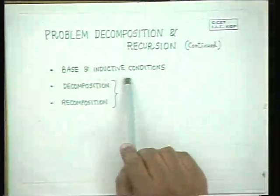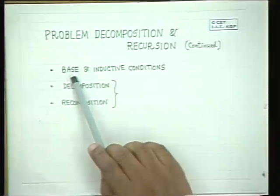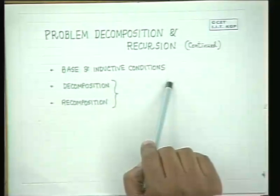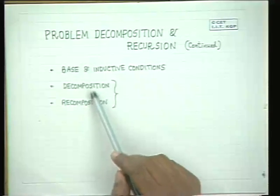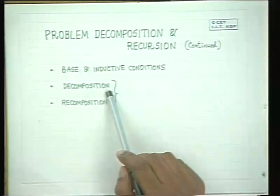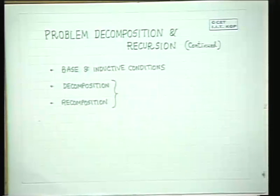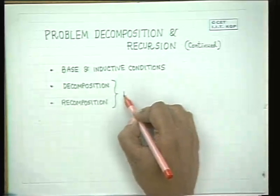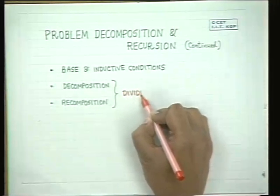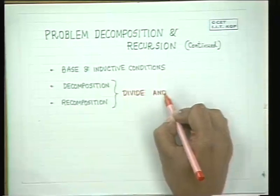We will continue our study of problem decomposition by recursion. We had decided that our problem will be written in a recursive manner by a principle in which we have two parts: the base condition and the inductive condition. The base condition specifies what will happen on the boundaries of the recursion and the inductive condition specifies the problem decomposition. In the recursive part we had two aspects: the decomposition part and the recomposition part, and together they form the divide and conquer principle.